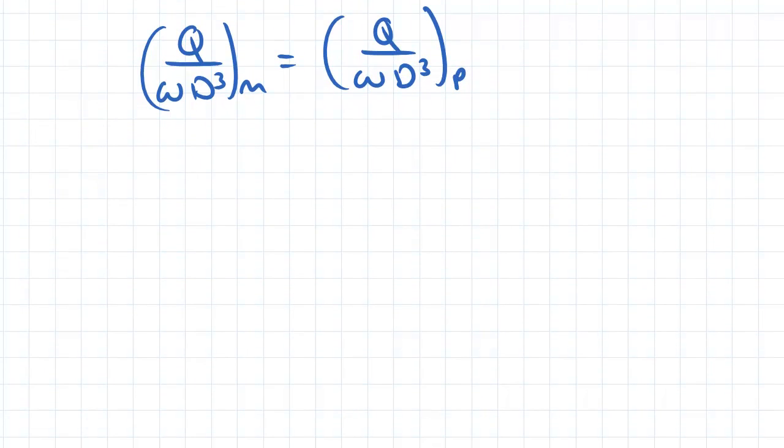So we can then rearrange this to make our flow rate for the model the subject. The flow rate of the model is going to be equal to the angular velocity of the model divided by the angular velocity of the prototype, multiplied by the diameter of the model divided by the diameter of the prototype all to the power of 3, multiplied by the flow rate of the prototype.